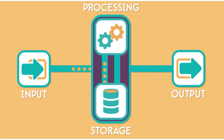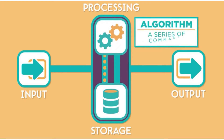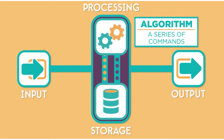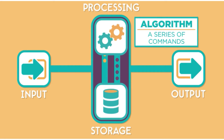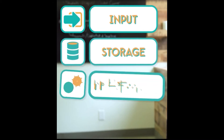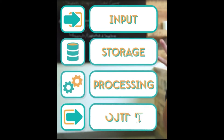Our computer performs basically 4 tasks. First one is takes information i.e. input, store it, process it, and gives result i.e. your output. So in common, all computers have 4 things: input, storage, processing, and output.